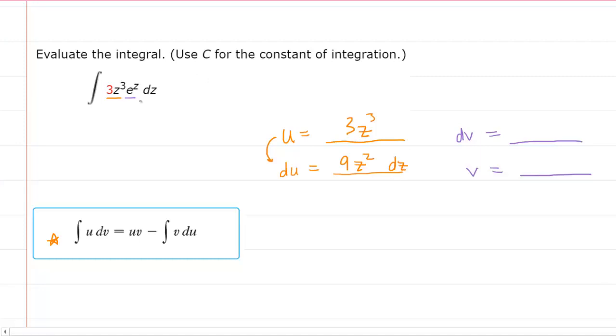Now for the dv, you essentially will let that equal the rest of the expression. So it will equal e to the z dz. Now we will not differentiate here. We will actually integrate in order to go from dv to v. But of course, the integral of e to the z is in fact still e to the z.